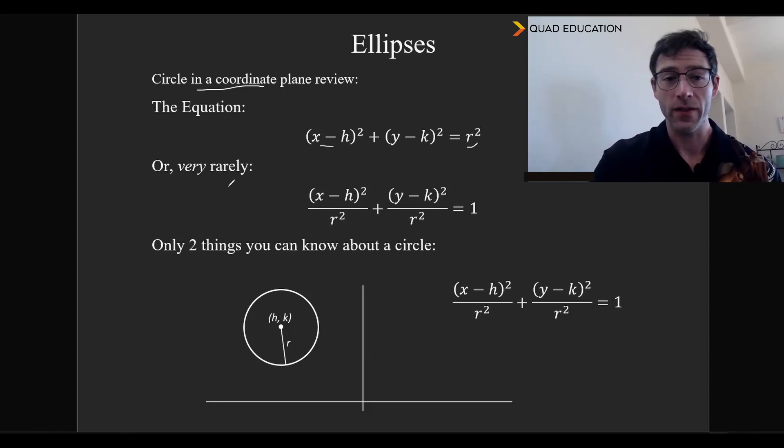And very rarely on the test, they're going to actually divide both sides by r squared, and you're going to get (x - h)²/r² + (y - k)²/r² = 1, which is exactly the same thing. We've just divided both sides by r squared, because here we get r squared over r squared being 1.